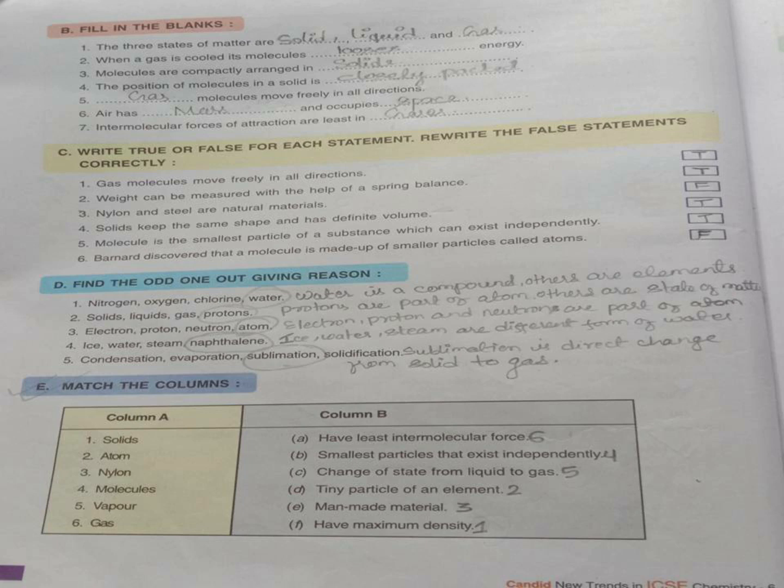Number 5, gas molecules move freely in all directions. Number 6, air has mass and occupies space. That is why they are called matter. Number 7, intermolecular force of attraction are least in gases.